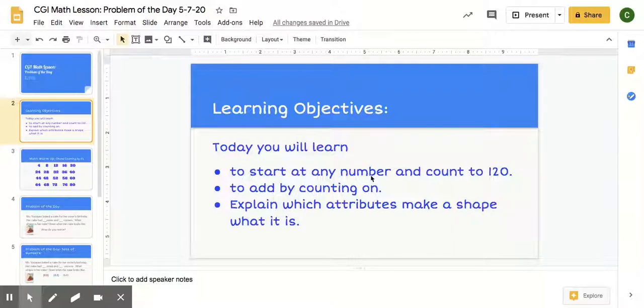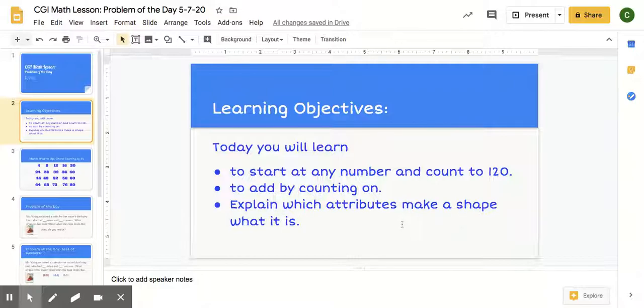Our learning objectives. Today we will learn to start at any number and count on to 120. We're going to add by counting on and we're going to explain which attributes make a shape what it is.